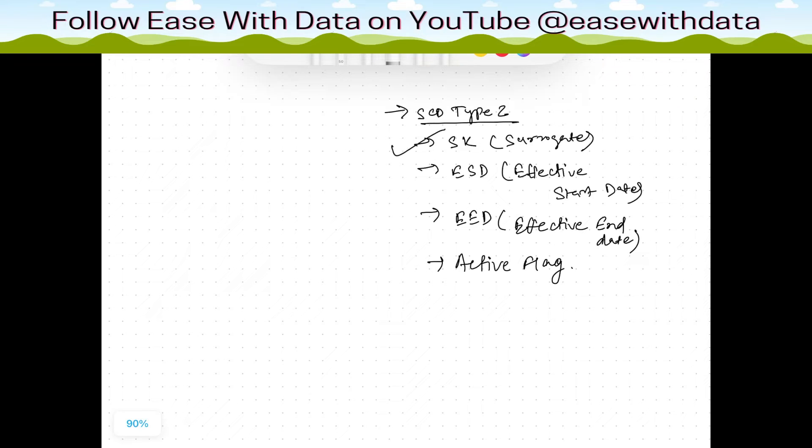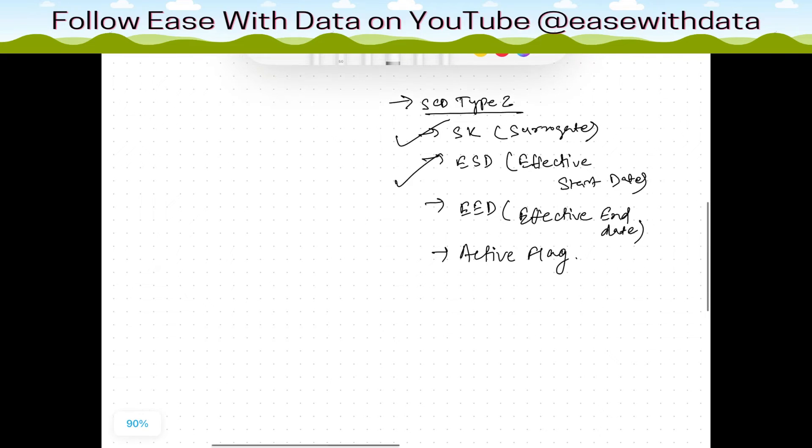Surrogate key we know is an artificial key that are used in the dimensions. Effective start date is when the record is starting, when we are loading that record. These are certain audit columns that we use as a part of this SCD type 2 dimension. Effective end date is when that record is expiring. If the record is the current record, we usually use a high date, which is 31st December 9999. This is the default high date that we use for effective end date if the record is a current record.